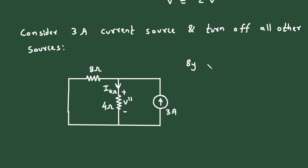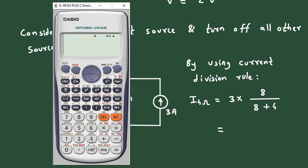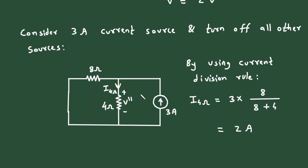By the current division rule, I₄Ω equals 3 amperes multiplied by the opposite branch resistance. The branch parallel to the 4 ohm is the 8 ohm resistor, so I₄Ω equals 3 multiplied by 8, divided by (8 plus 4), which gives 2 amperes.